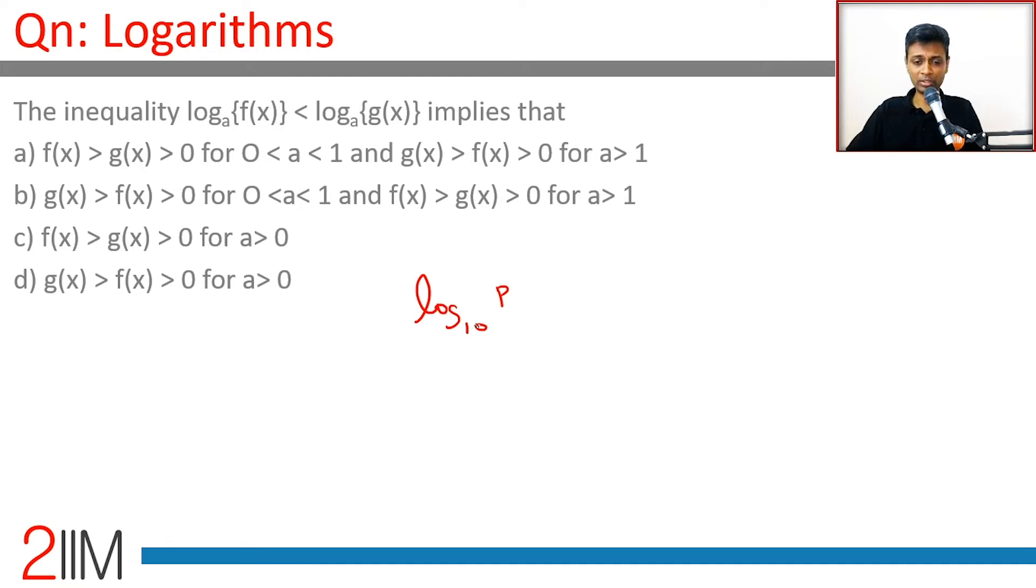Log p to the base 10 is greater than log q to the base 10. 10 power something is p, 10 power something else is q. This tells us p is greater than q. Log of 100 to the base 10 is greater than log 10 to the base 10. 10 squared is 100, 10 power 1 is 10. 2 is greater than 1, so 100 is greater than 10. Wonderful.